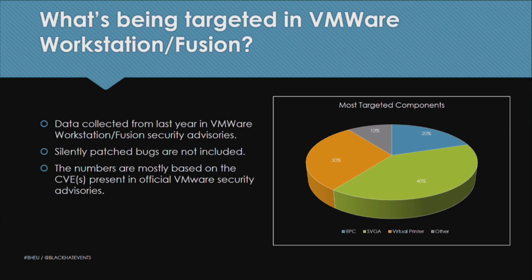At the very early stage of our research, we wanted to find out the most popular components of VMware that had been targeted. We started analyzing the advisories that VMware publishes. The advisories are mostly not very technical, but have some component details. We saw vulnerabilities in the SVGA component (graphics), issues fixed in the RPC layer, and issues in the virtual printer. VMware Workstation and Fusion share most core functionalities, so patches applied to Workstation were applied to Fusion as well.